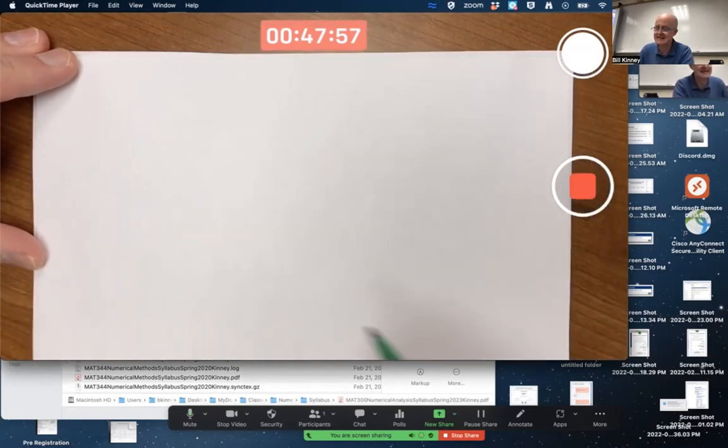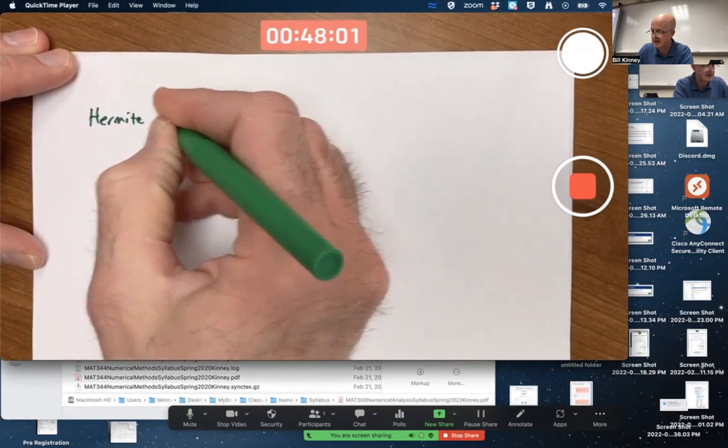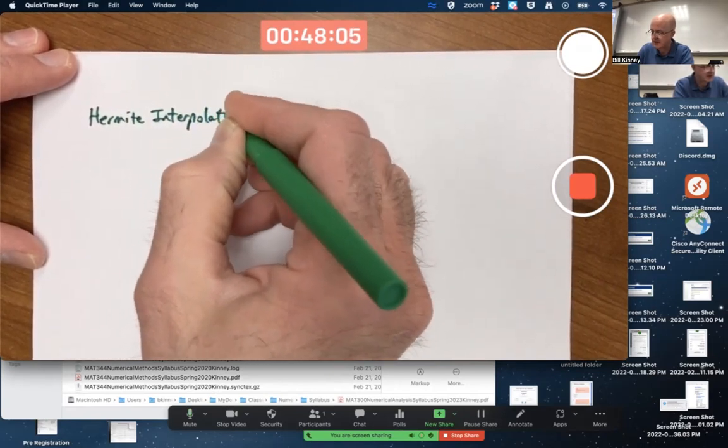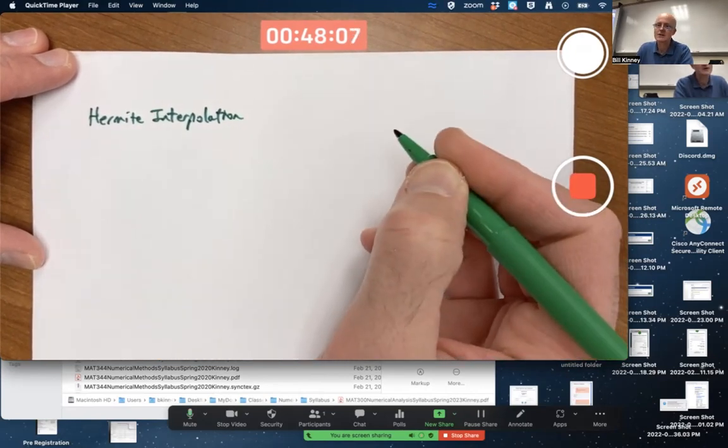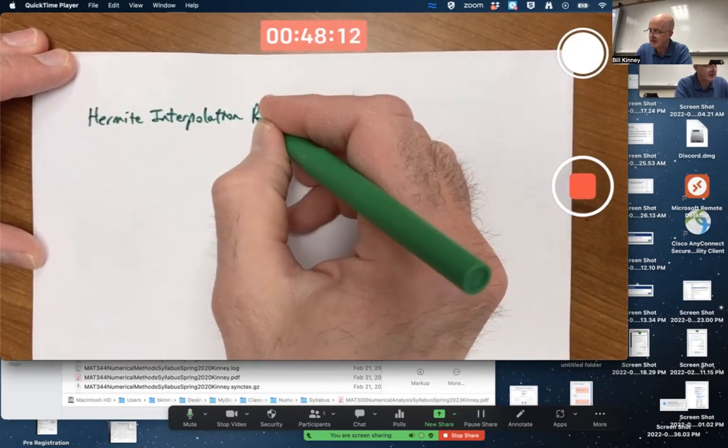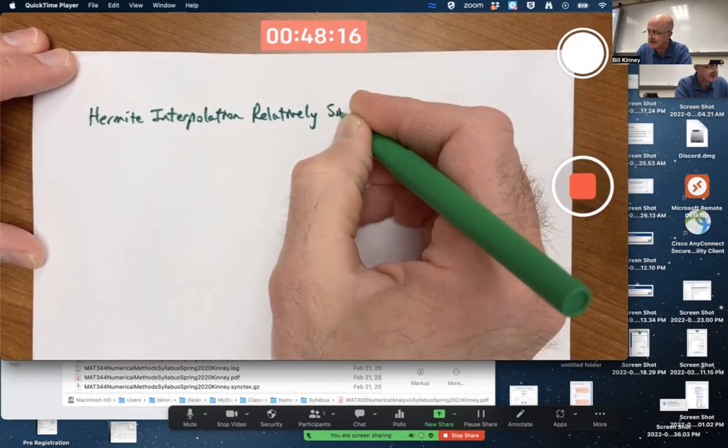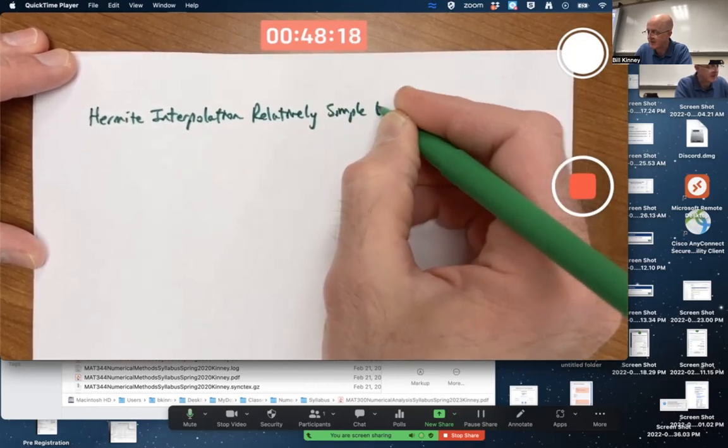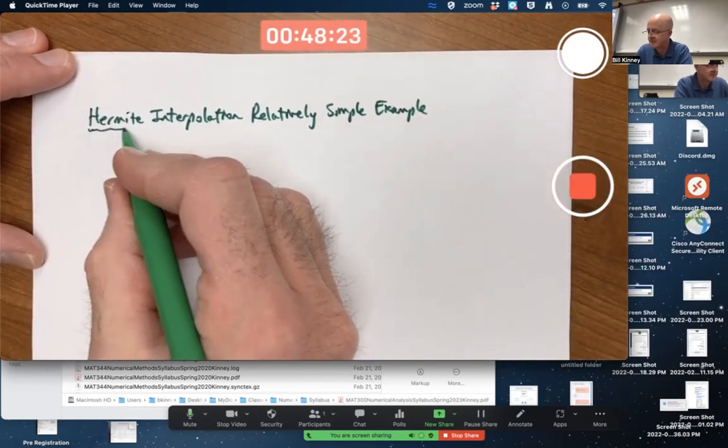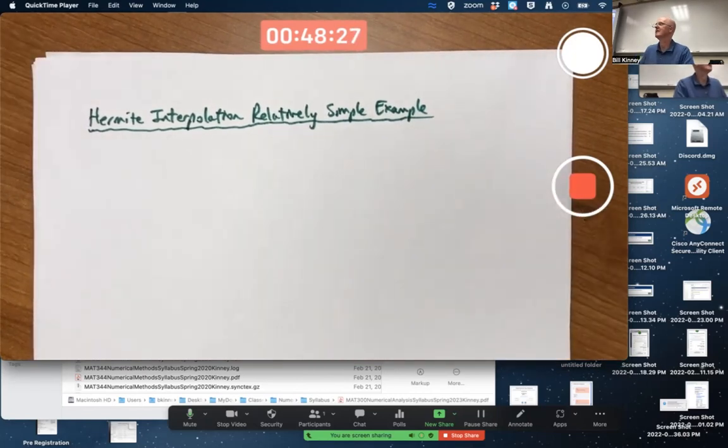So what we're going to do here is Hermite Interpolation. I'll describe this as a relatively simple example. Now, the word relatively is in there because it doesn't mean it really is that simple, but compared to the general case, it's going to be fairly simple.